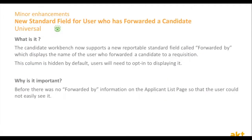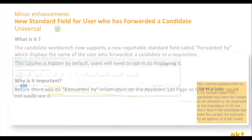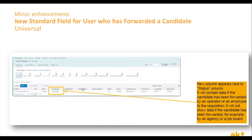The next feature is a small addition but a useful one. From this day on, we can see the person who forwarded the candidate to us. Till now, you had to go into the candidate record in order to view who forwarded or referred this person to your requisition. From this day on, you can see this field directly on screen in the candidate pipeline.